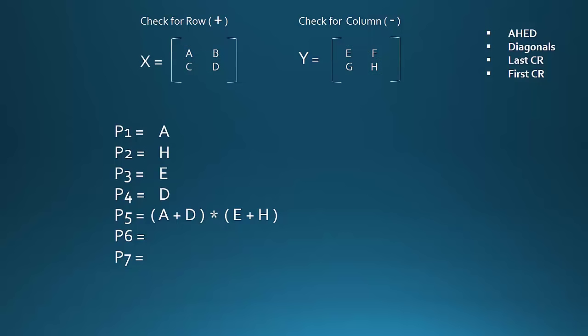Then we have last CR. C represents here column, R represents here row. We will look for the last column in X. The last column in X is BD, so we will write B minus D. We have taken a minus sign because a column is considered here. Then last R. Last R in Y is GH. Since it is a row we will write G plus H.